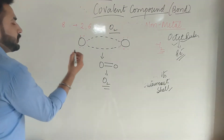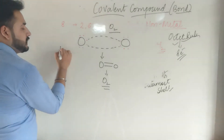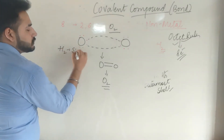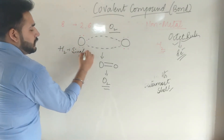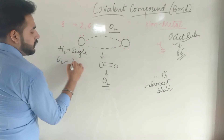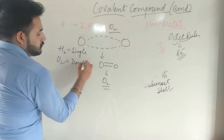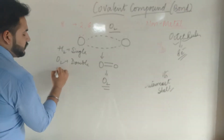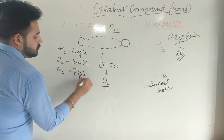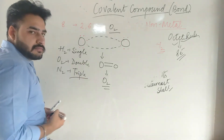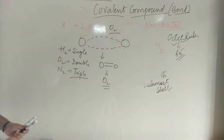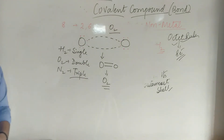So O₂ is also a covalent bond. To summarize the bond types: in the case of hydrogen, it is a single bond; in the case of oxygen, it is a double bond; in the case of nitrogen, it is a triple bond. These are the covalent bonds. Now let's discuss some properties of covalent bonds.